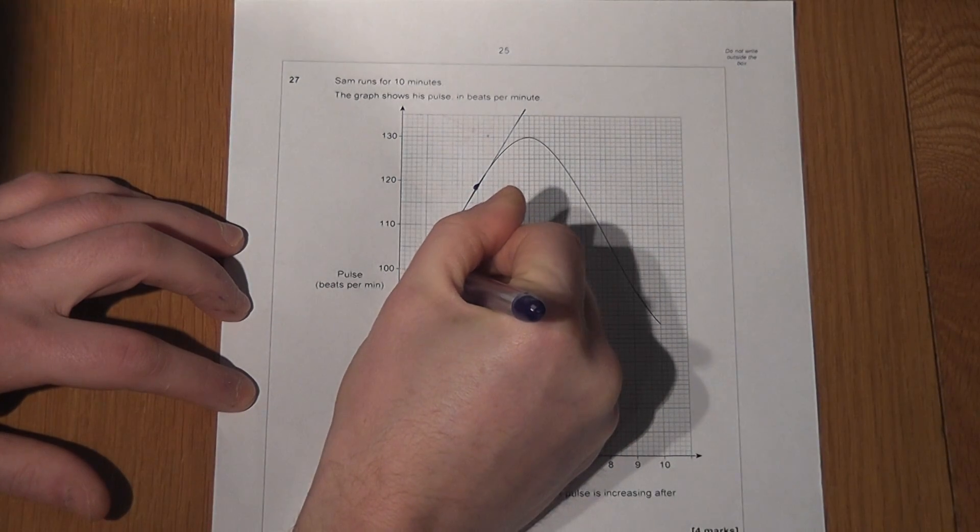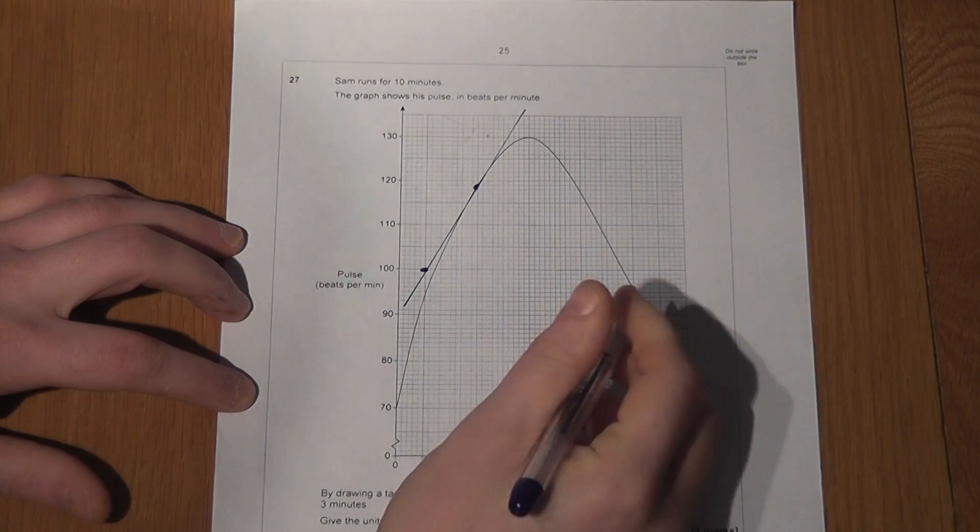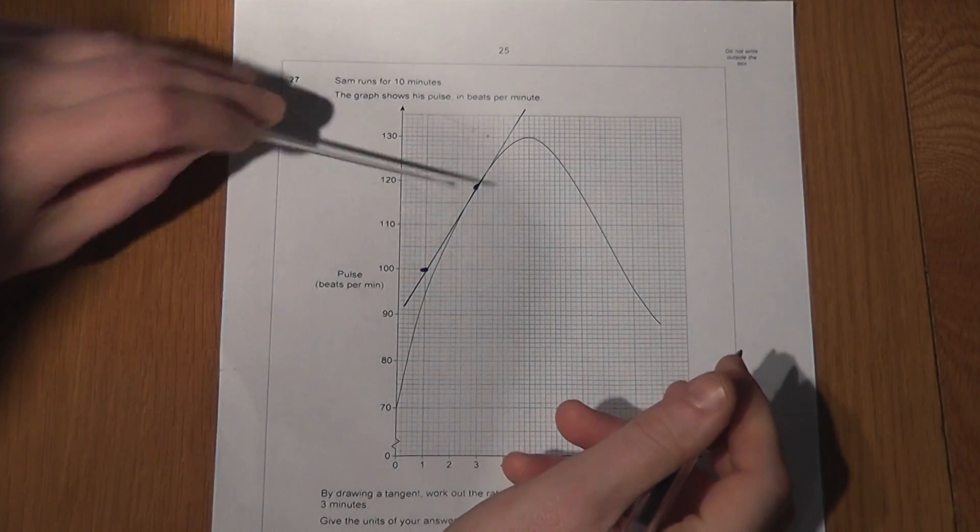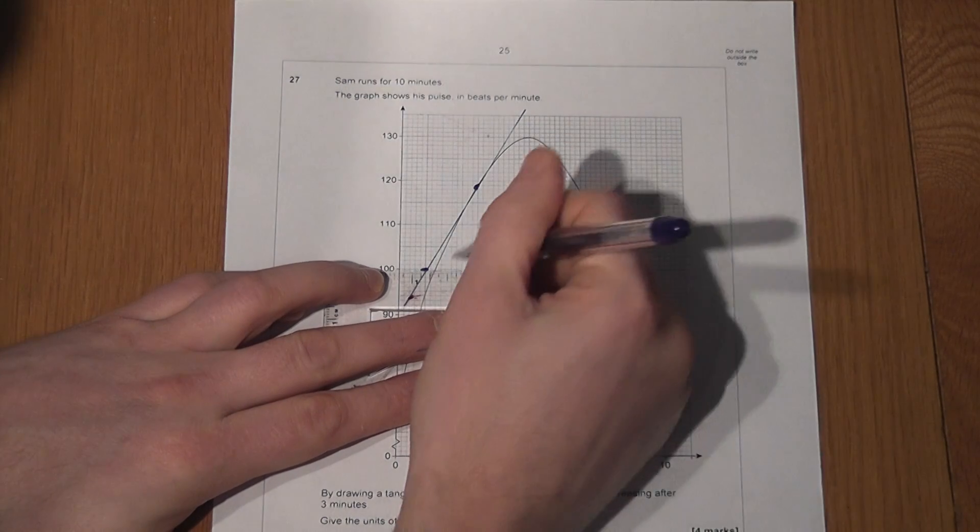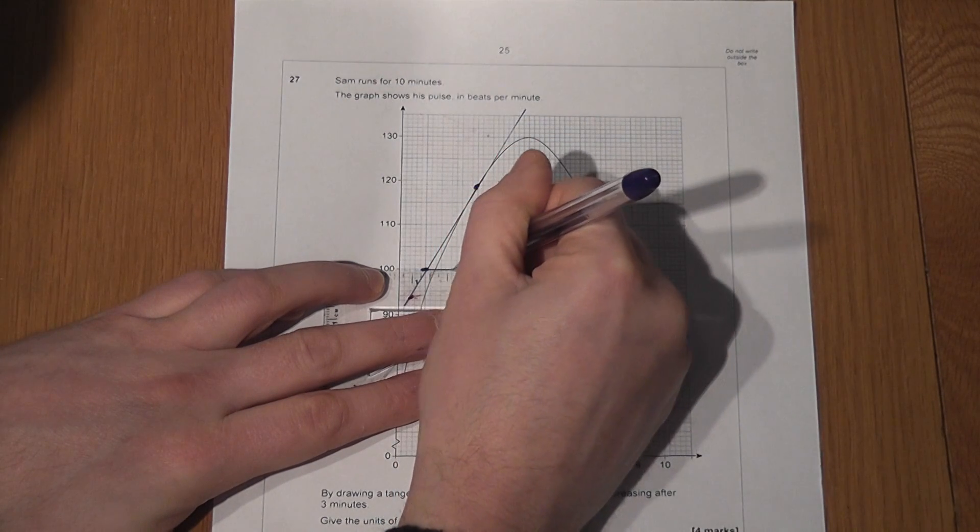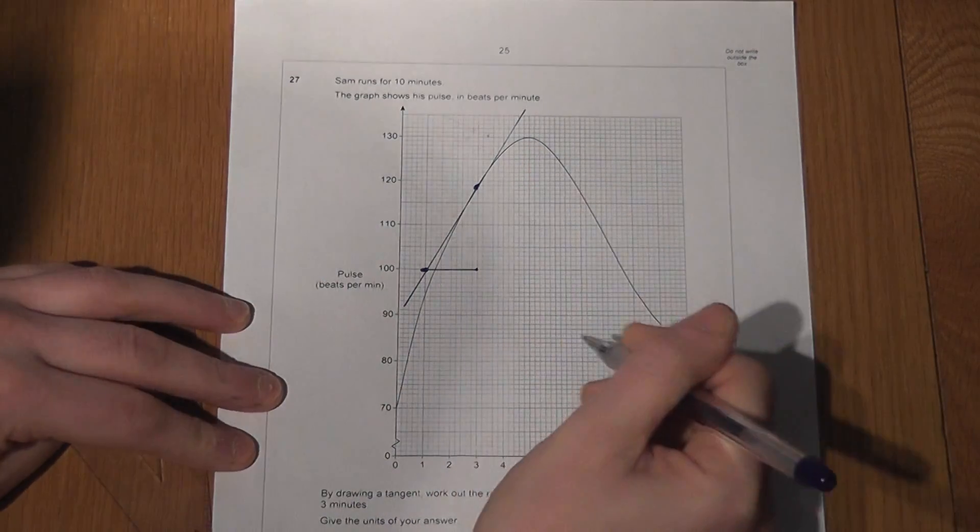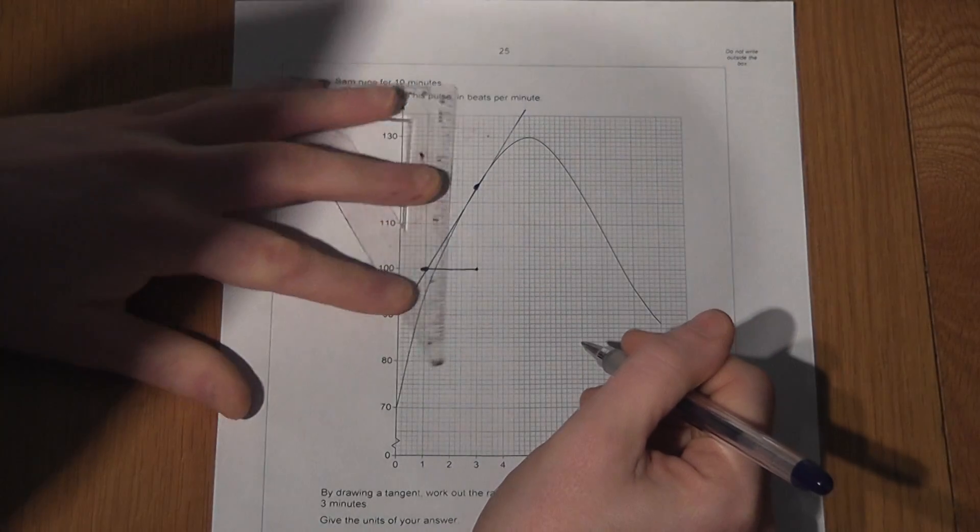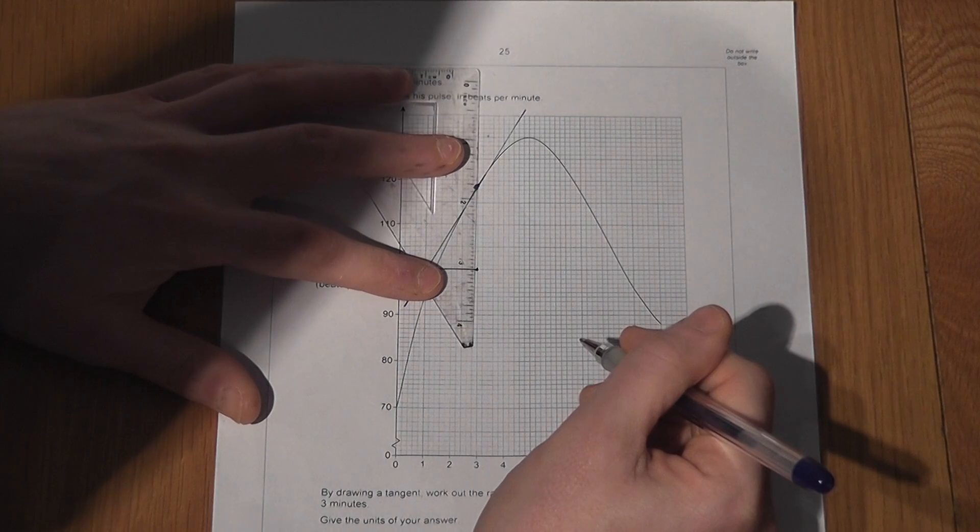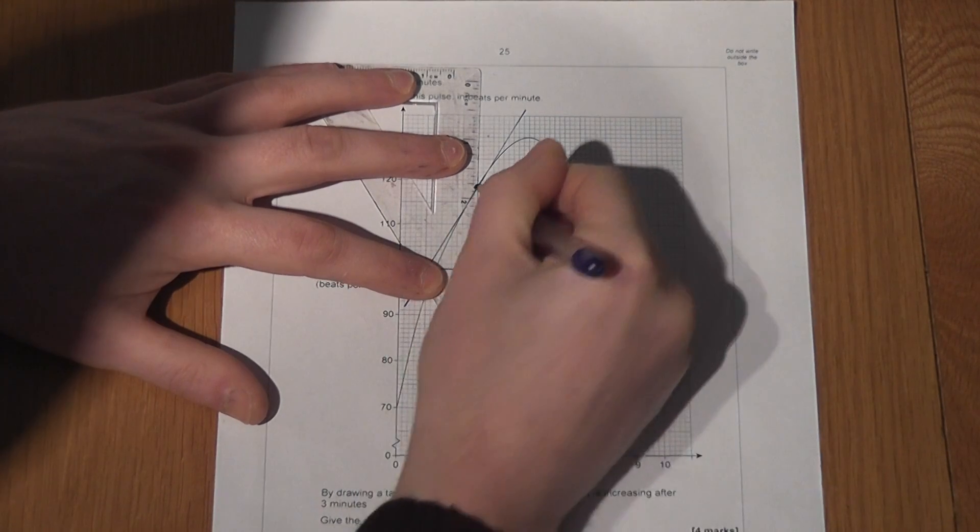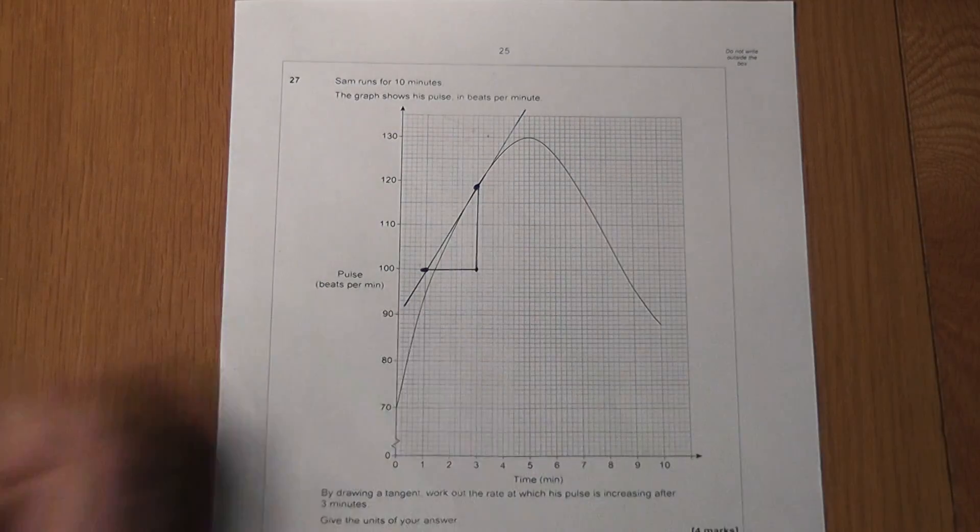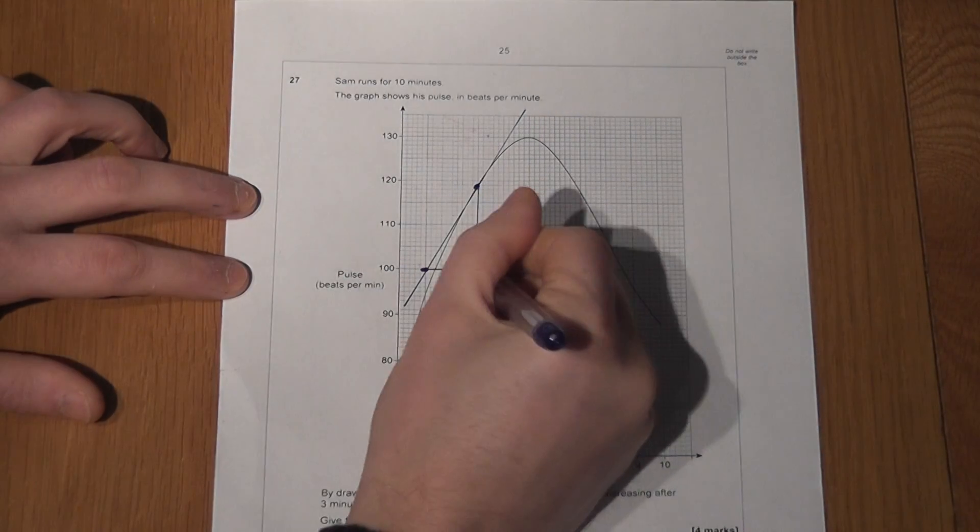Now I'm going to start my point here and just draw a nice big triangle. I'll give it a nice broad width. I'll go across by two, and I'll then draw a line up to the curve. So there's my right-angled triangle.